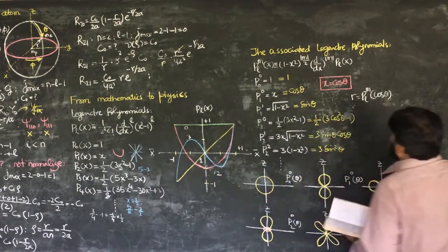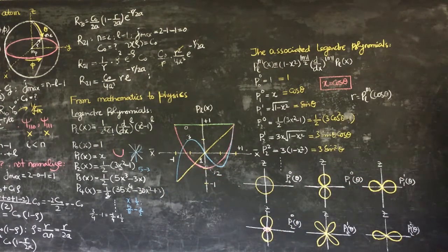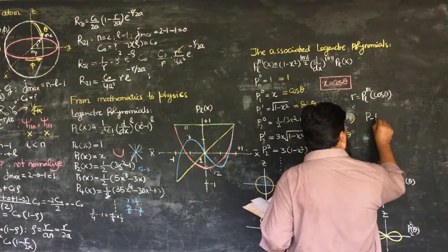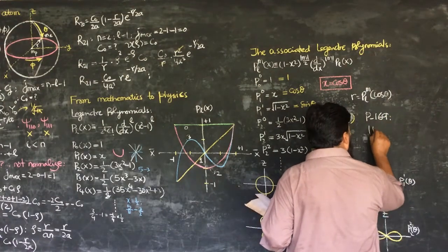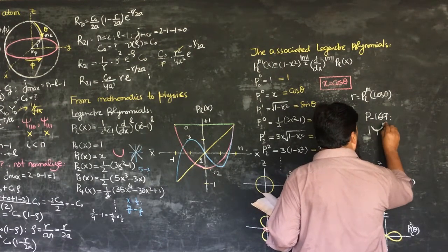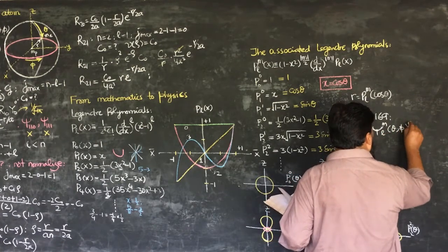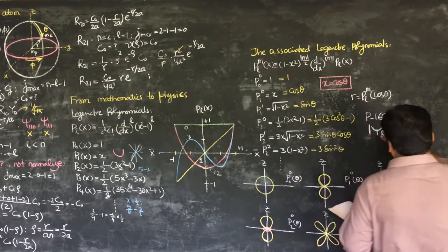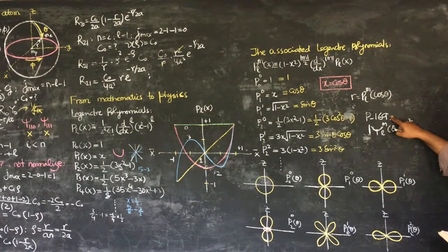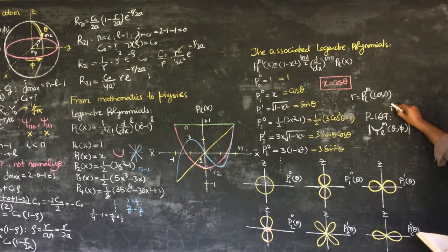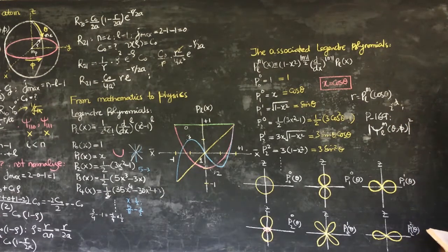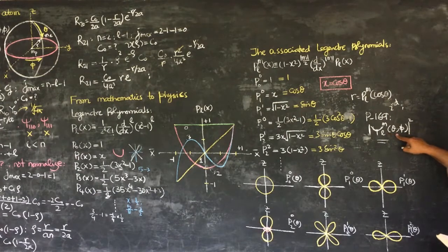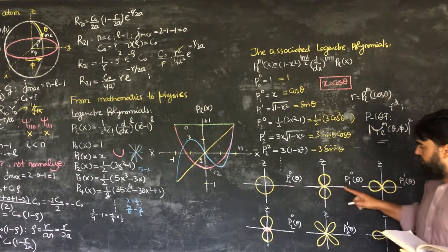These are the associated Legendre polynomials. Similarly, in the book on page 169, the mod square of YLM theta and phi have been plotted and it is really hard for me to plot them, but they are on page 169 of the second edition of Griffiths. So one can consider how they will look like when YLM's mod square are plotted.